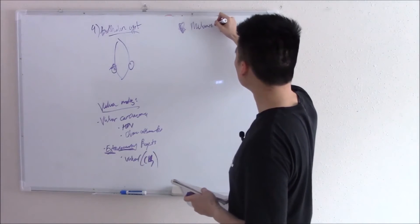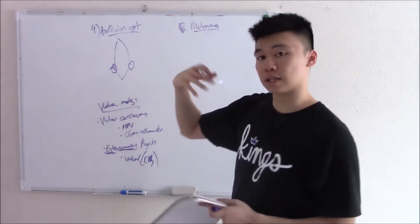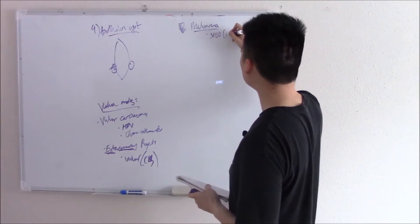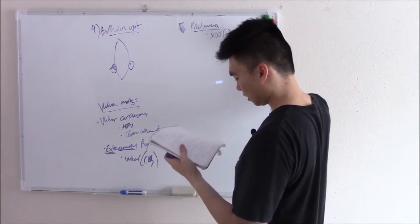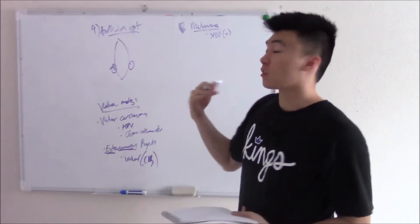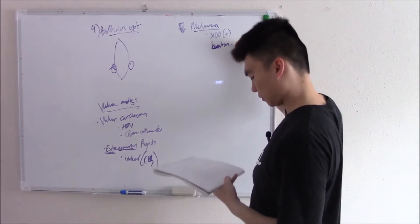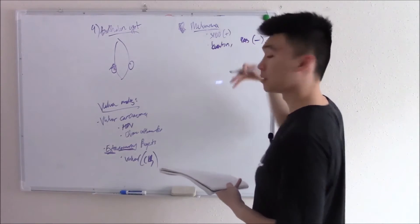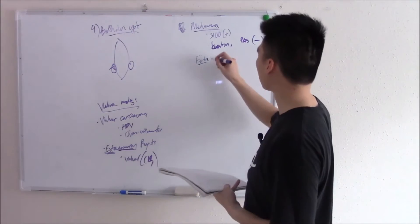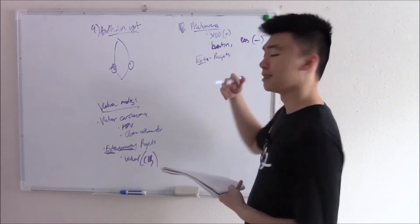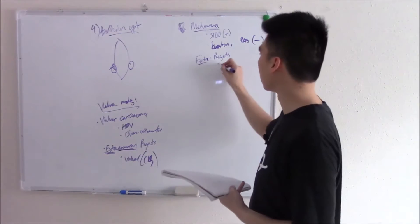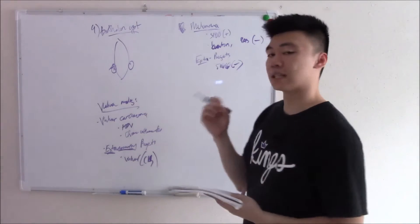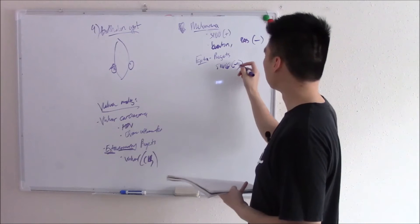Melanoma involves your melanocytes, which are neural crest cells. Neural crest cells are S100 positive on staining. They however don't stain for things like keratin or PAS, so they are keratin and PAS negative. Extramammary Paget's is not from neural crest origin, so it's S100 negative.